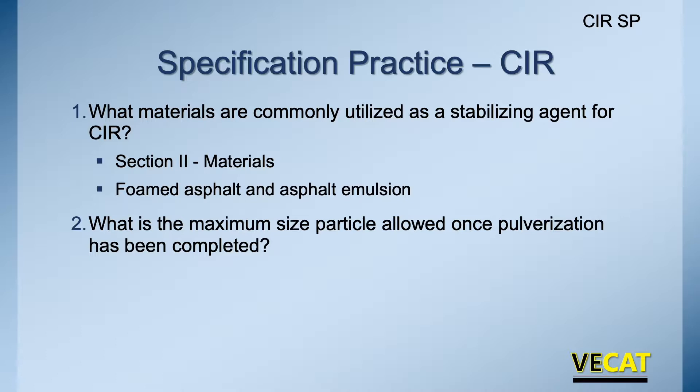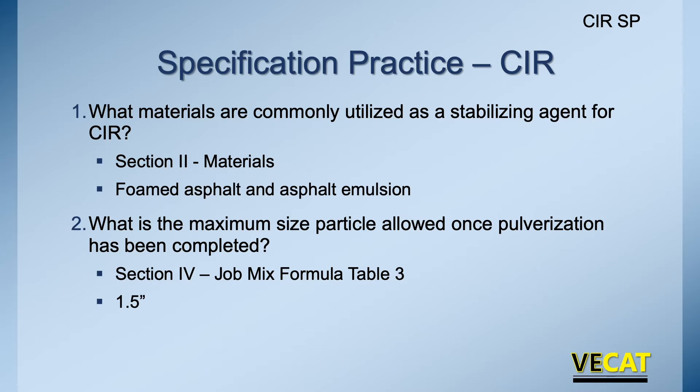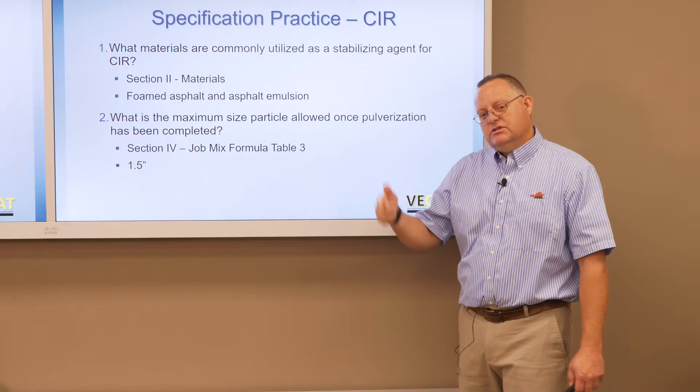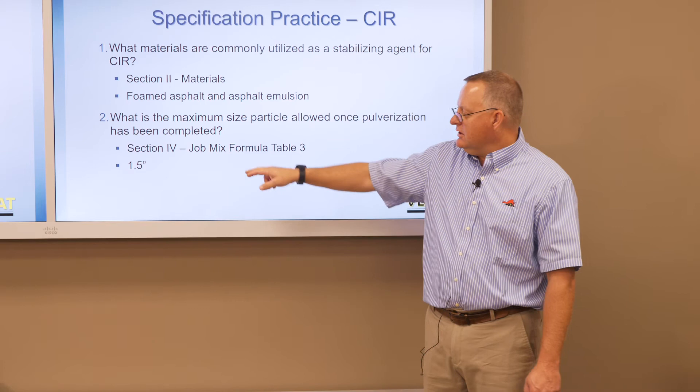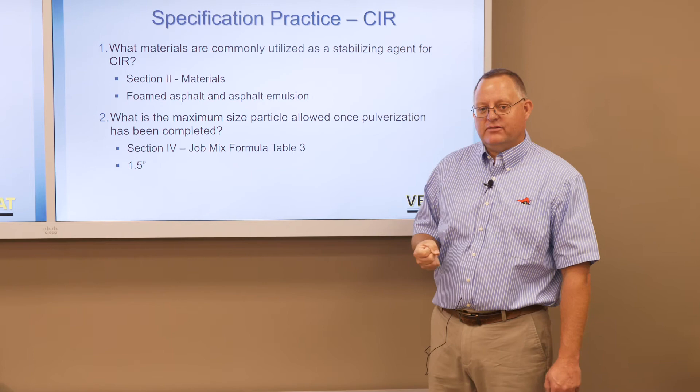For maximum particle size: after pulverization with the cold in place recycler, we find in Section 4, Job Mix Formula, Table 3, that the maximum is one and a half inches. All the pulverized asphalt and aggregate particles should be less than one and a half inches in size, which can be checked by dry sieving.